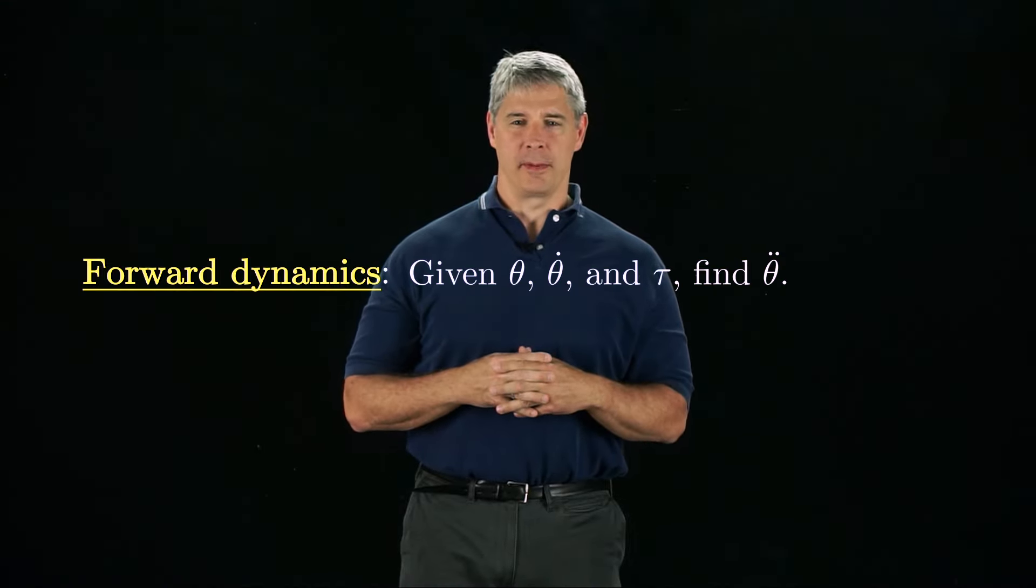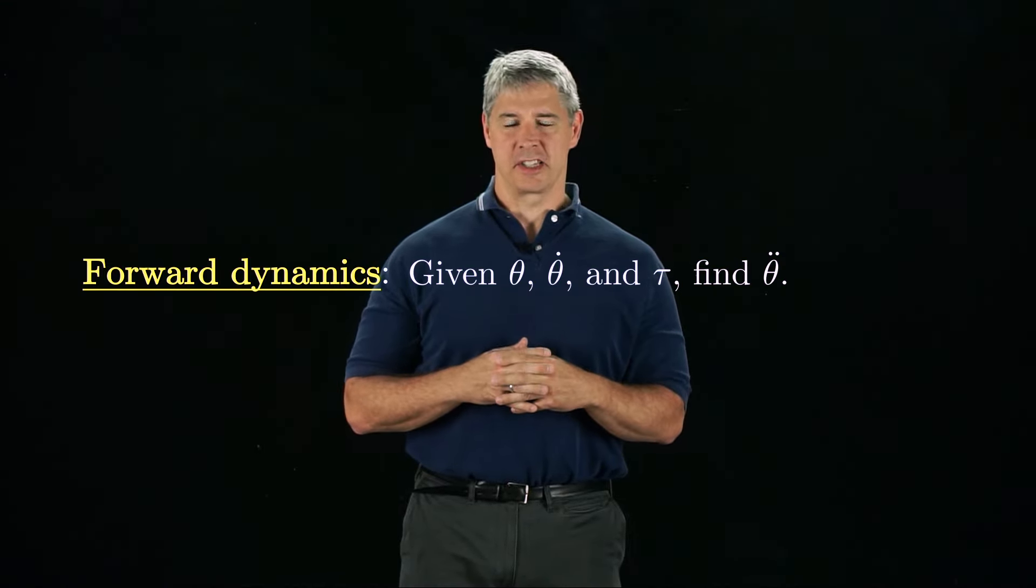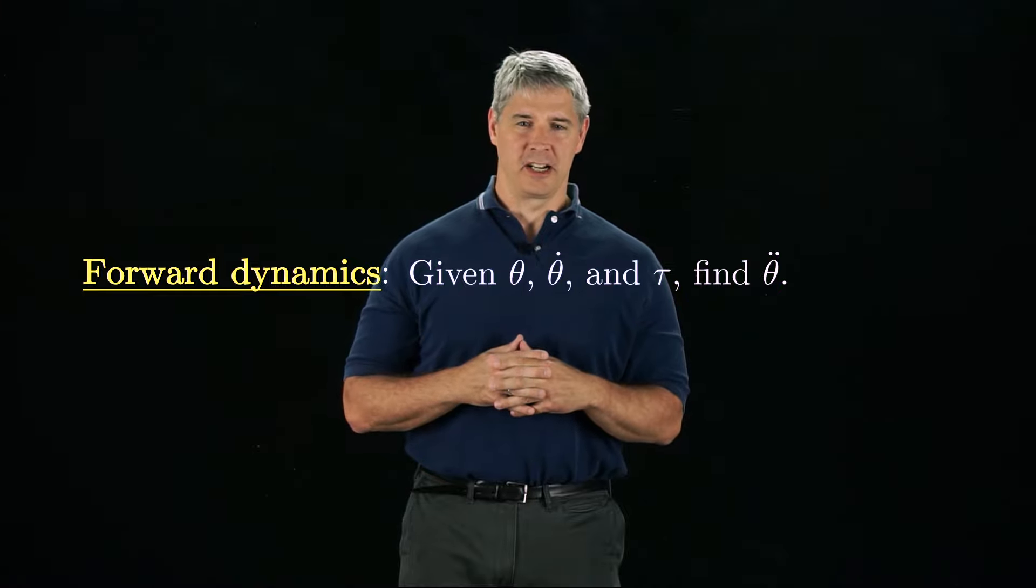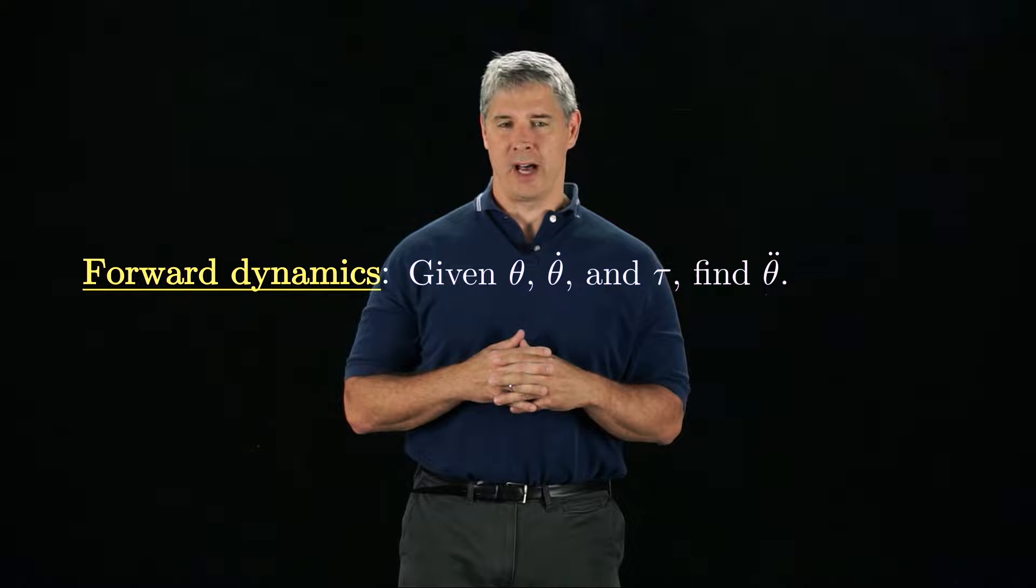In Chapter 8, we study the dynamics of open-chain robots. For example, the forward dynamics problem is to calculate the joint accelerations θ̈, given the current joint positions θ, the joint velocities θ̇, and the forces and torques τ applied at each joint.